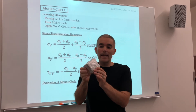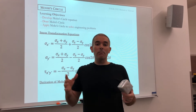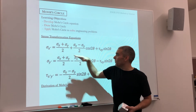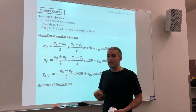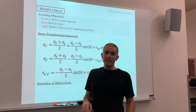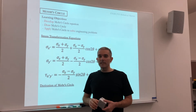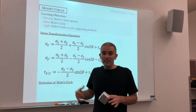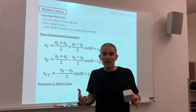So we rotated this block, and we said at some arbitrary direction, we could solve for what we called sigma X prime. We could plug in sigma X, sigma Y, and tau X Y into this equation, along with the angle of rotation, and we would be able to solve for the normal stress at that arbitrary angle. We did this for sigma Y prime, and we also solved for the shear stress at that angle. That was the whole deal with the stress transformation equations, but these are somewhat long and difficult to remember.